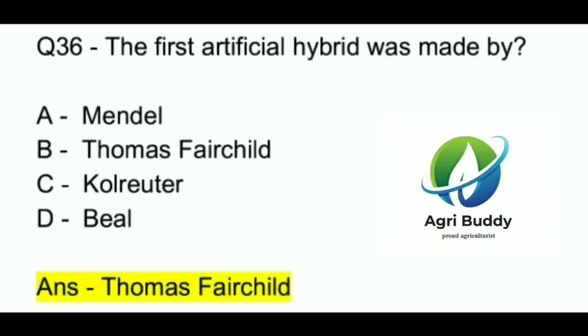Question 36. The first artificial hybrid was made by? A. Mendel. B. Thomas Fairchild. C. Kohlreuther. D. Beal. And the answer is Thomas Fairchild.